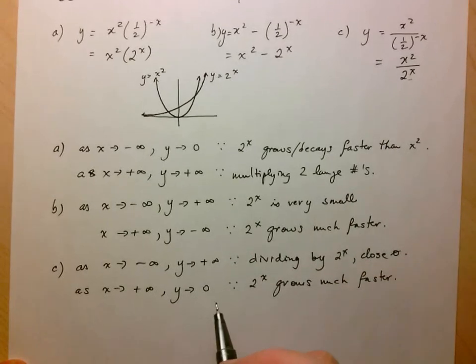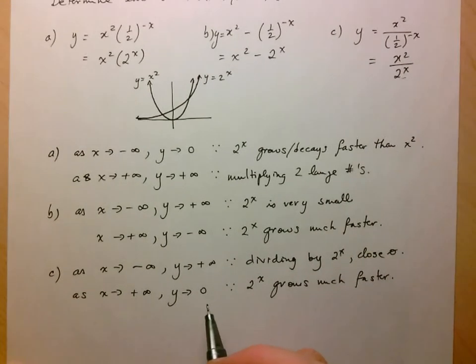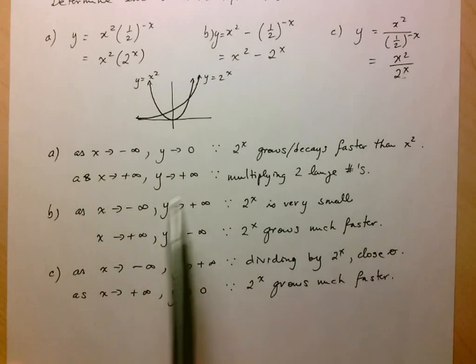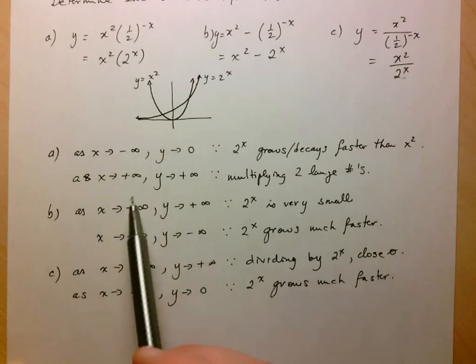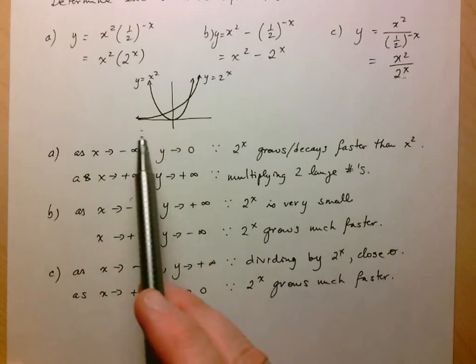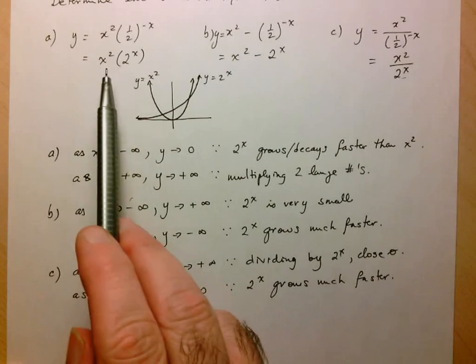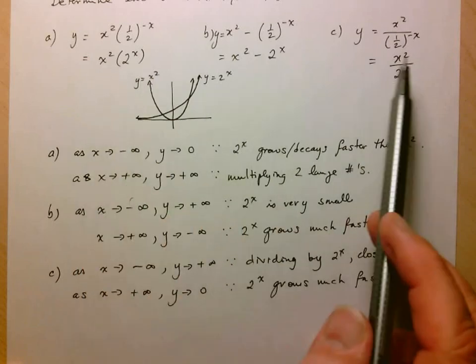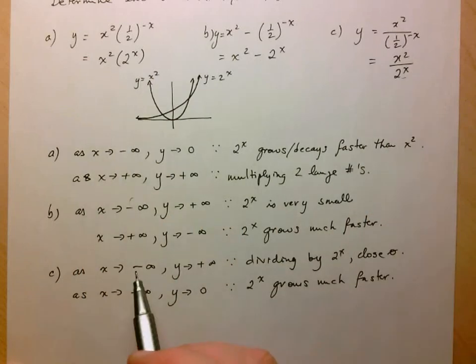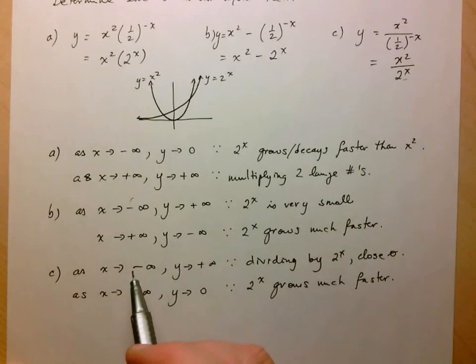This is often how you have to solve these problems: look at the different end behaviors, compare them, and see what effect the operation is going to have on the numbers you're dealing with. That's it for this one.